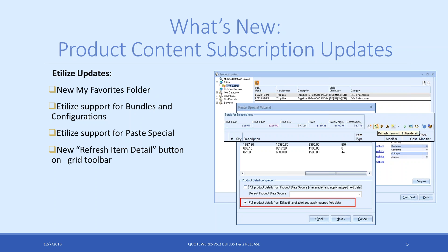Building on that, one of the nice new features we added was the ability to use Etilize for your bundles and configurations. If you are creating bundles in QuoteWorks and you want to pull items from Etilize, you can now do that. Same thing for configurations — this will allow you to build from items in Etilize. You can also pull them directly from the My Favorites folder as well.